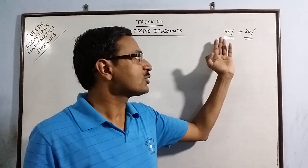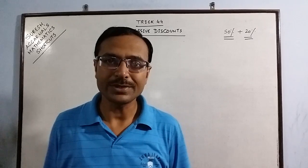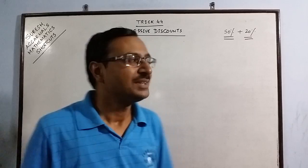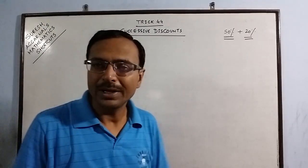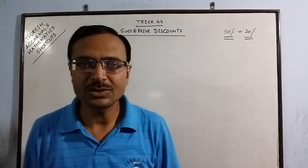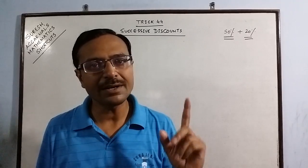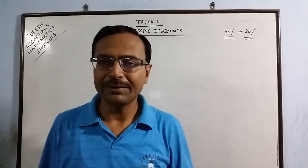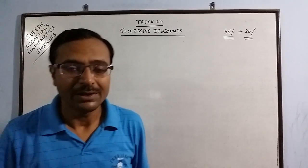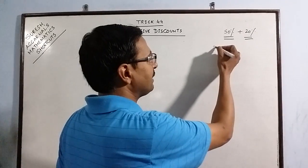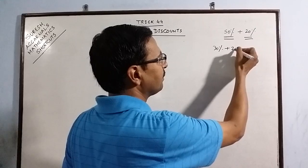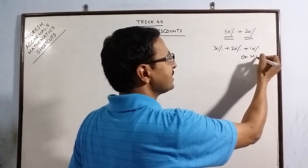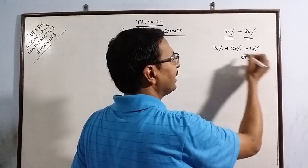The successive discounts of 50 and 20 will not add up to 70, it adds up to a little less than 70 which we have to calculate. This is my aim today. I have to tell you methods through which you can find out a single discount which is equivalent to 2 or more given discounts. It can be more also, you can be offered a discount of 30% plus 20% plus 10% on MRP.